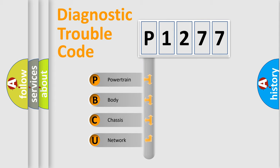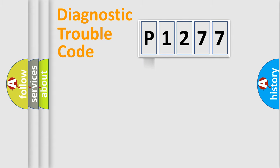We divide the electric system of automobile into four basic units: Powertrain, Body, Chassis, and Network. This distribution is defined in the first character code.